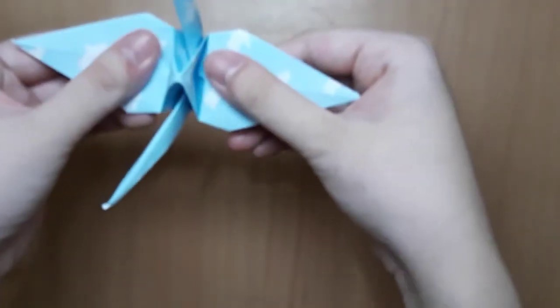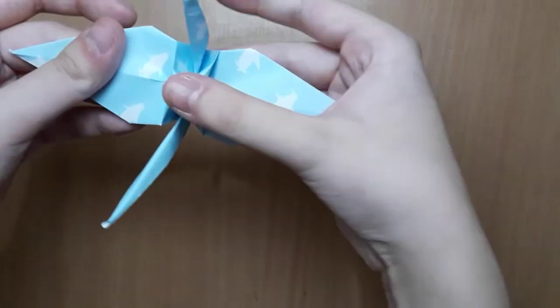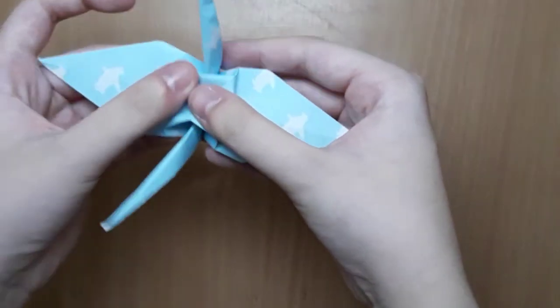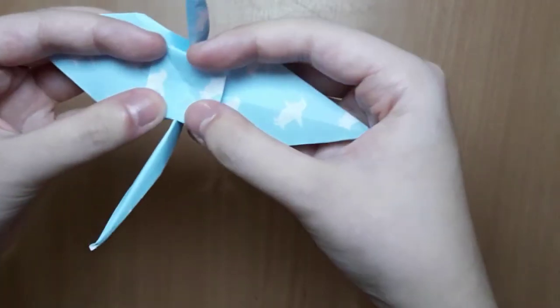Gently pull the wings apart and push this down into the middle, and it becomes a square.